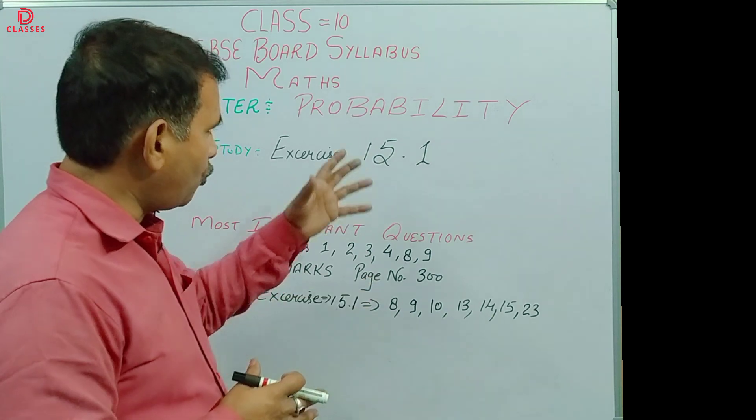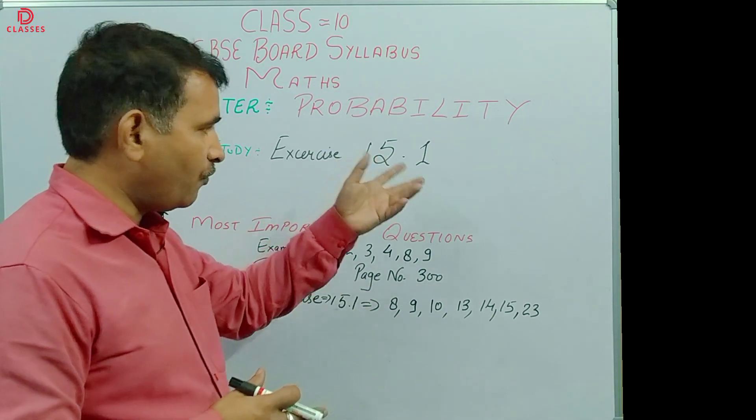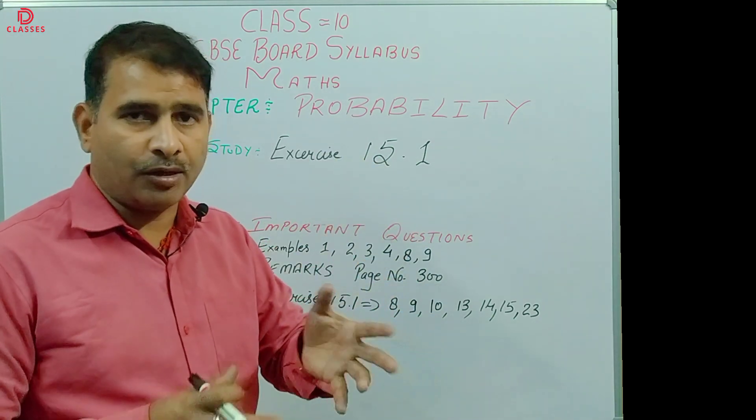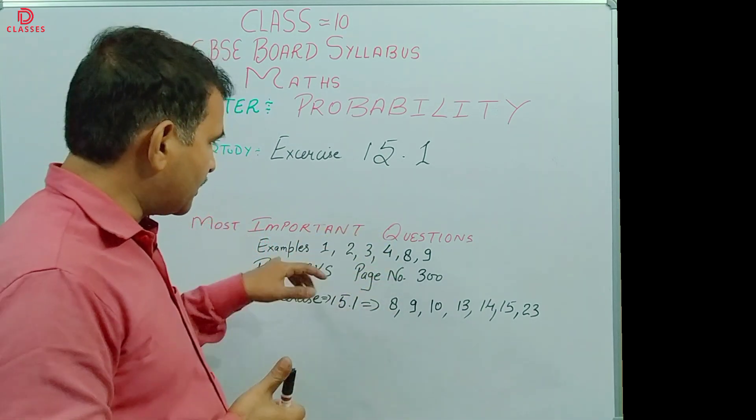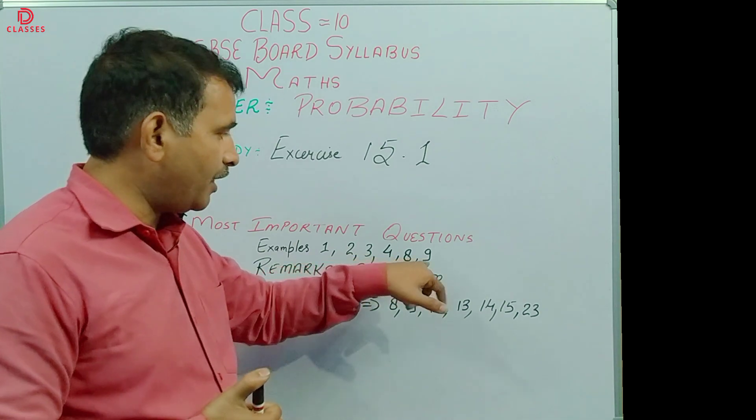The chapter is Probability. In Exercise 15.1, only one chapter is coming and nothing is deleted from this chapter. The most important questions are example number 1, 2, 3, 4, 8, 9.